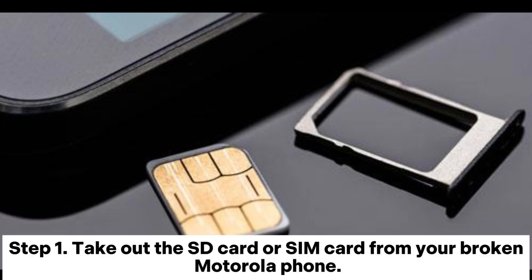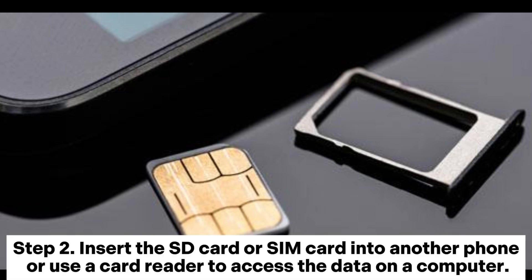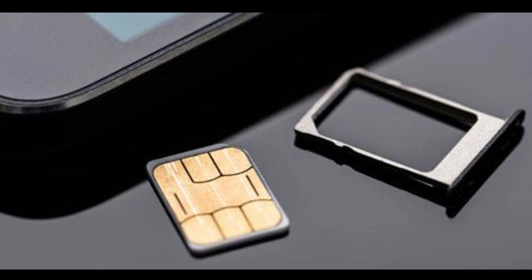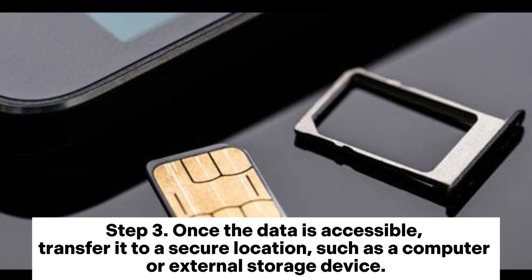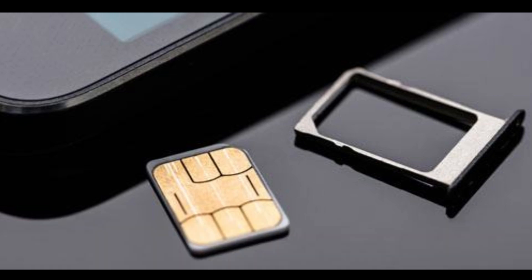Step 1: Take out the SD card or SIM card from your broken Motorola phone. Step 2: Insert the SD card or SIM card into another phone, or use a card reader to access the data on a computer. Step 3: Once the data is accessible, transfer it to a secure location, such as a computer or external storage device.